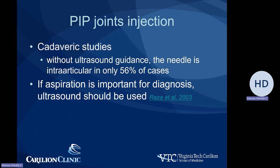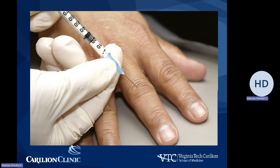So if aspiration is important for diagnosis, we should use ultrasound. However, other studies have clearly shown that even a juxta-articular injection of a steroid provides similar pain relief and functional improvement compared to an intra-articular injection. The injection portal is dorsal, with the needle slightly inclined in a proximal to distal direction and dorsal to palmar to allow placement in the joint. A small amount of fluid should be injected — as shown in the picture, 0.2 cc of fluid.